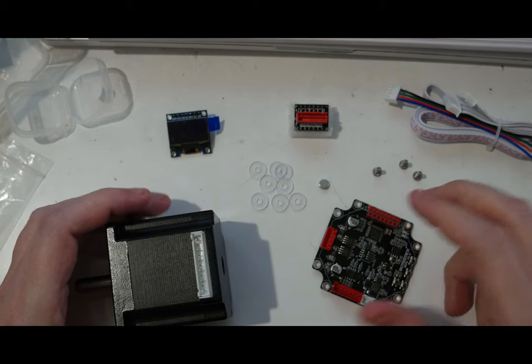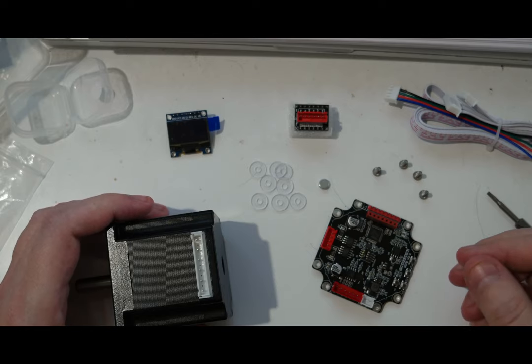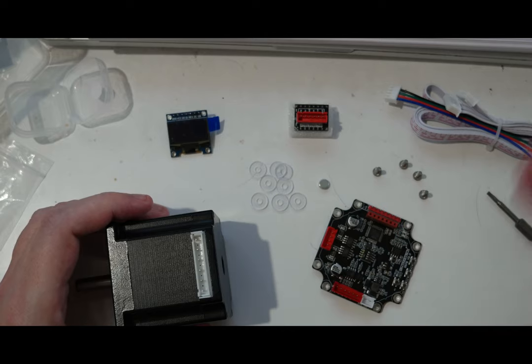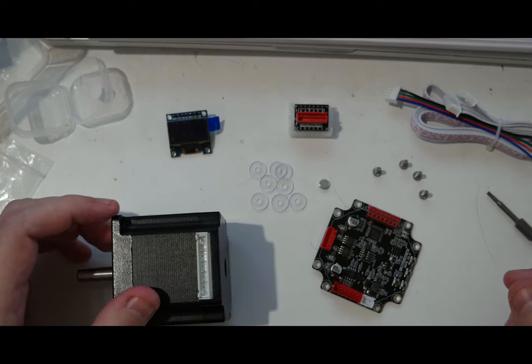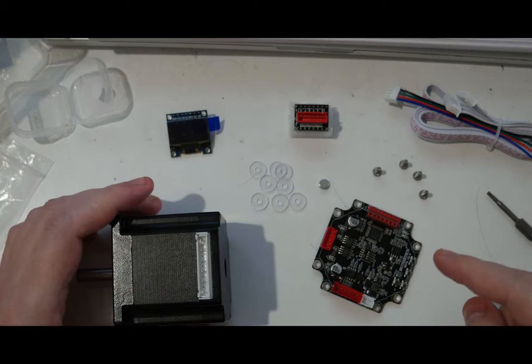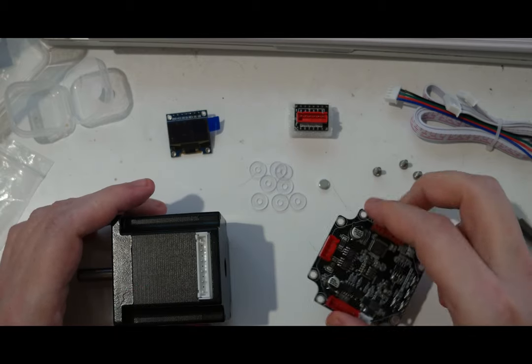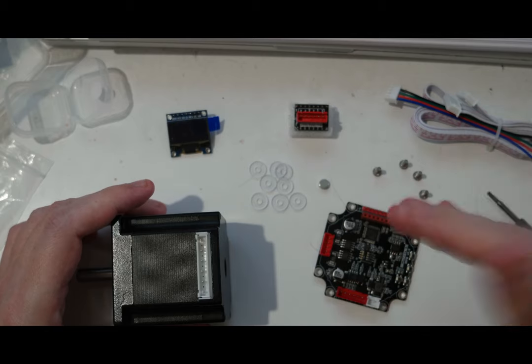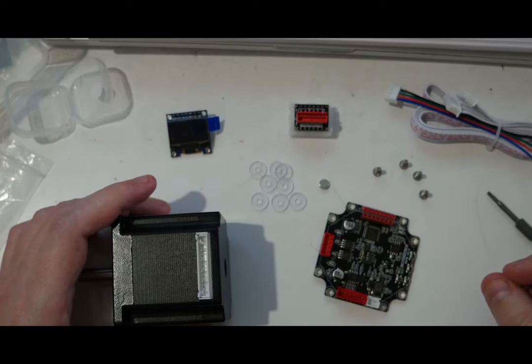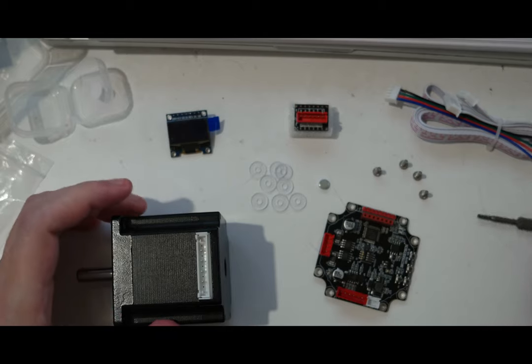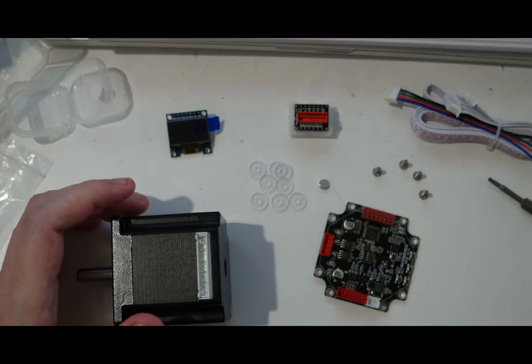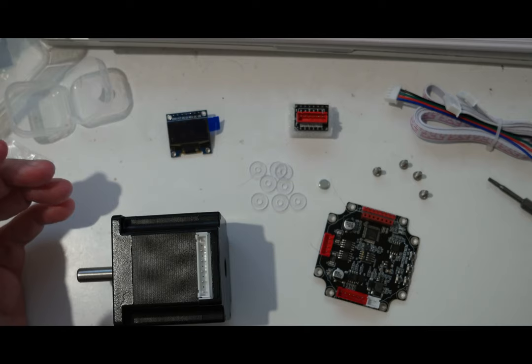So for example when a motor skips steps or there is a problem with the printer and there is a shifting in position of the axis, the closed loop drivers will go back to the position before this problem happens. And it allows you to avoid layer shifting which is usually what happens when you have these kind of problems, and possibly to save a print which is always good.